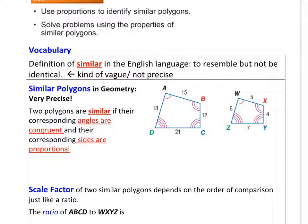Well I looked up what the definition of the word similar is in the dictionary and in the everyday English language similar means to resemble but not to be identical. That's not very precise, somewhat vague, but in the case of geometric similarity it's anything but. So very precise definition. Two polygons are similar if their corresponding angles are congruent and their corresponding sides are proportional.